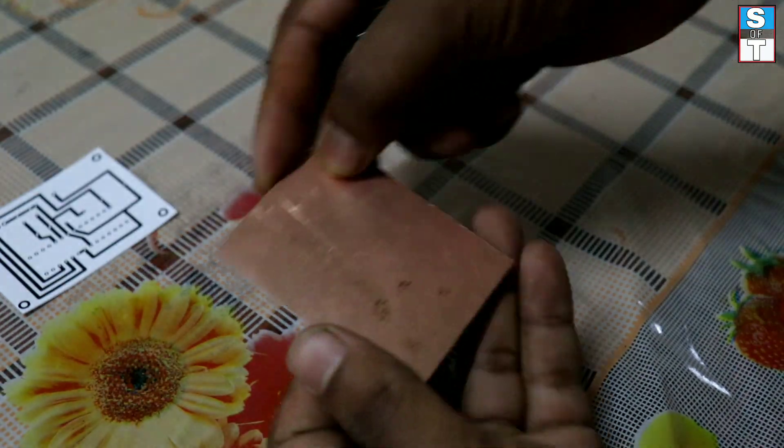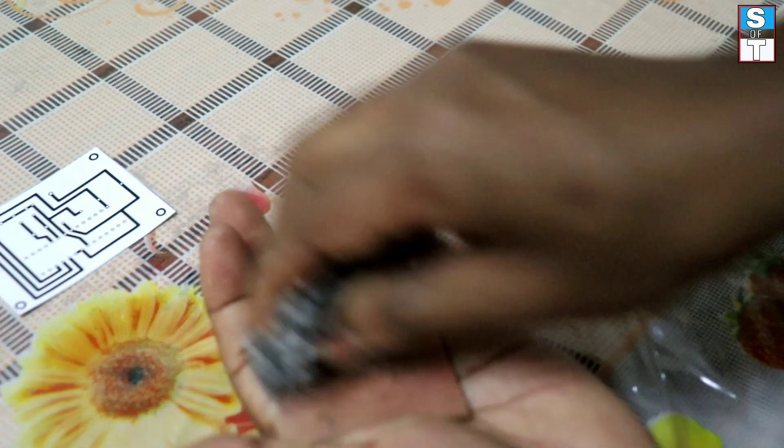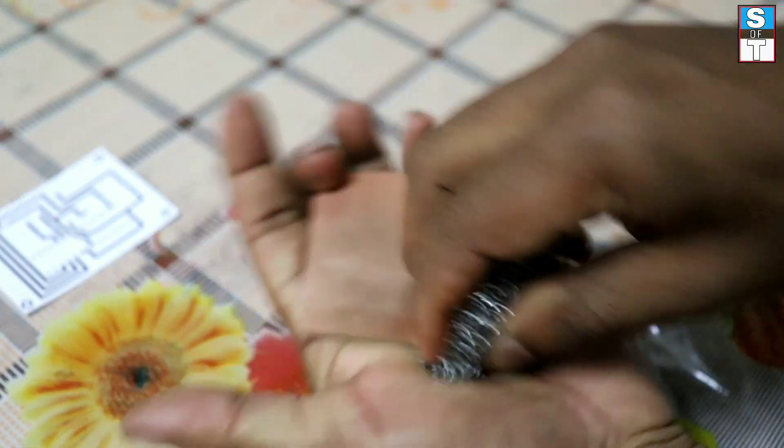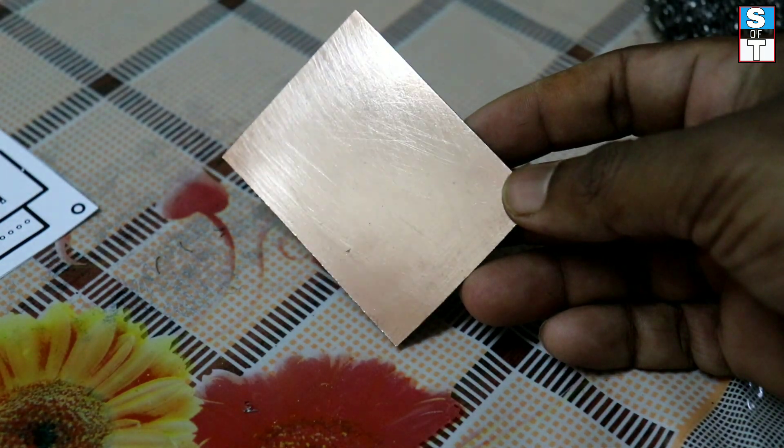Then with the help of a scrubber, clean the upper part of the copper layer. Now it gets shiny and it's clean.